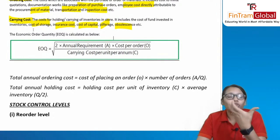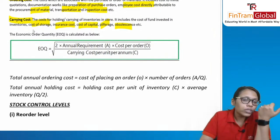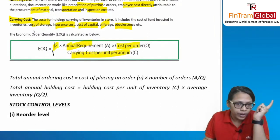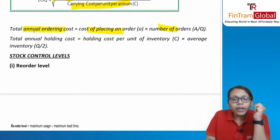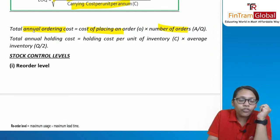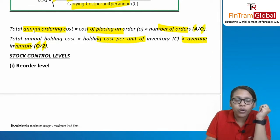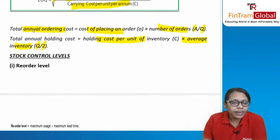Annual ordering cost = cost of placing an order × number of orders (annual demand ÷ EOQ). Total annual holding cost = holding cost per unit × average inventory (EOQ ÷ 2). In this material chapter, we also talked about stock control levels: maximum level (maximum inventory to hold), minimum level (minimum inventory to hold), and reorder level (when to place a fresh order).